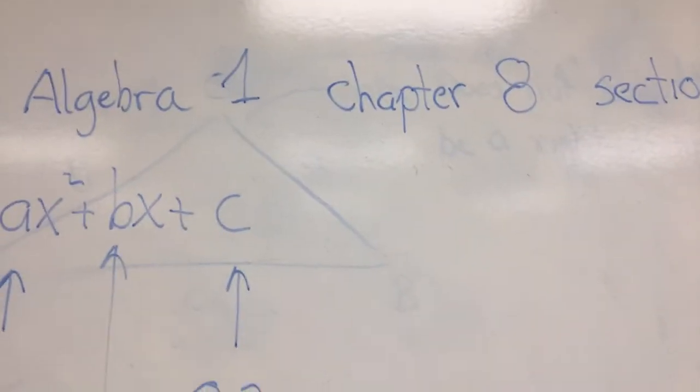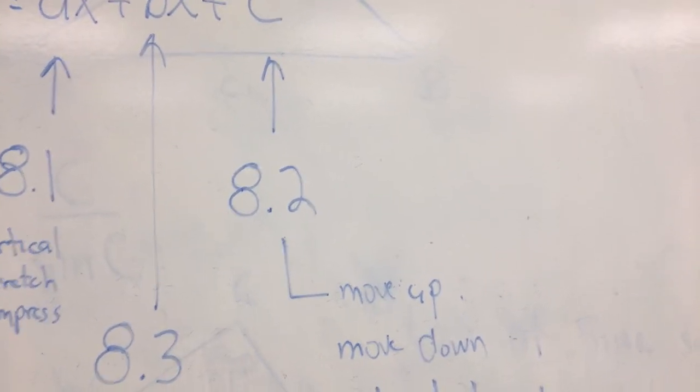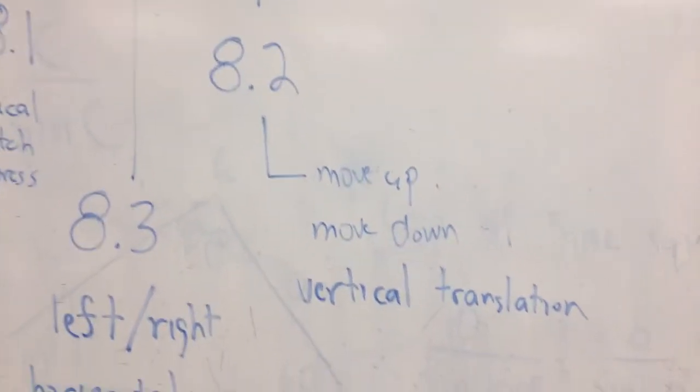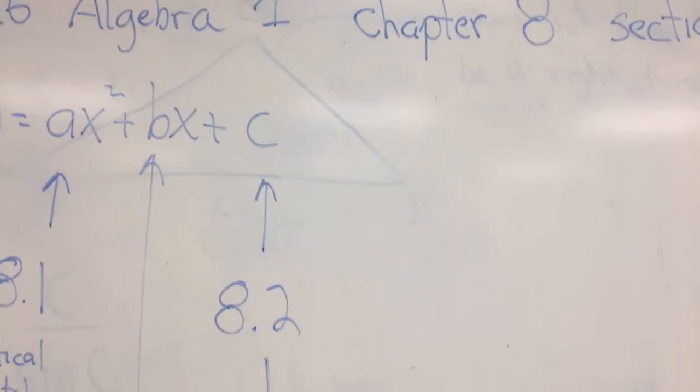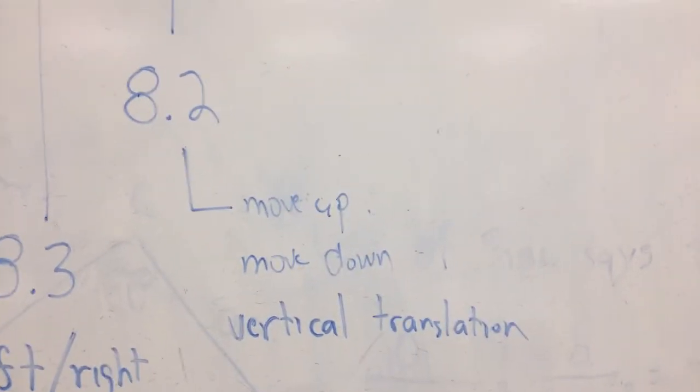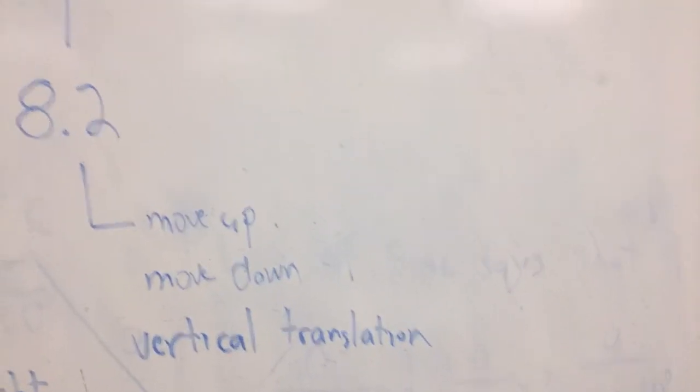Now 8.2, that's the c on the end. And that moves the parabola up or down. It's called a vertical translation. So c, its mission in life is to move the parabola up and down. So we have it getting skinny or fat, and here we have it moving up and down.